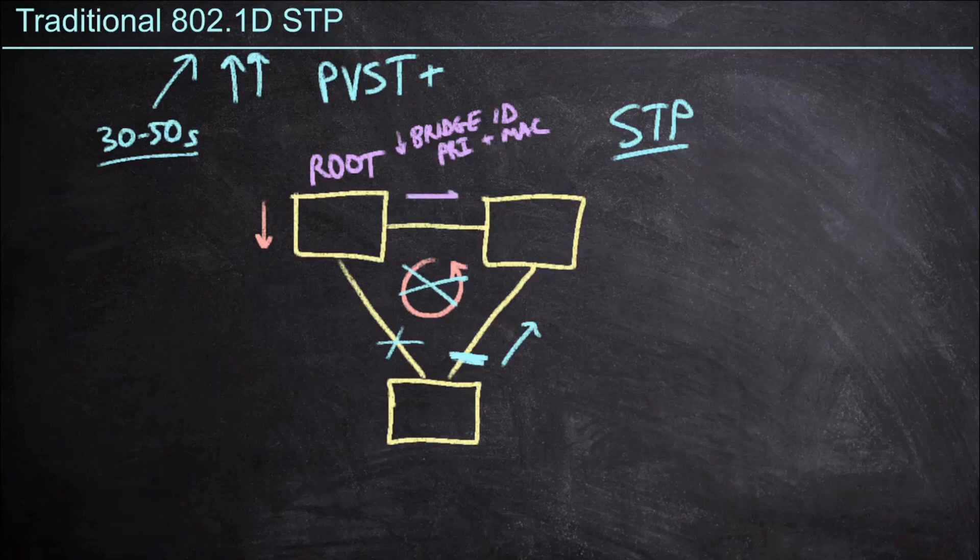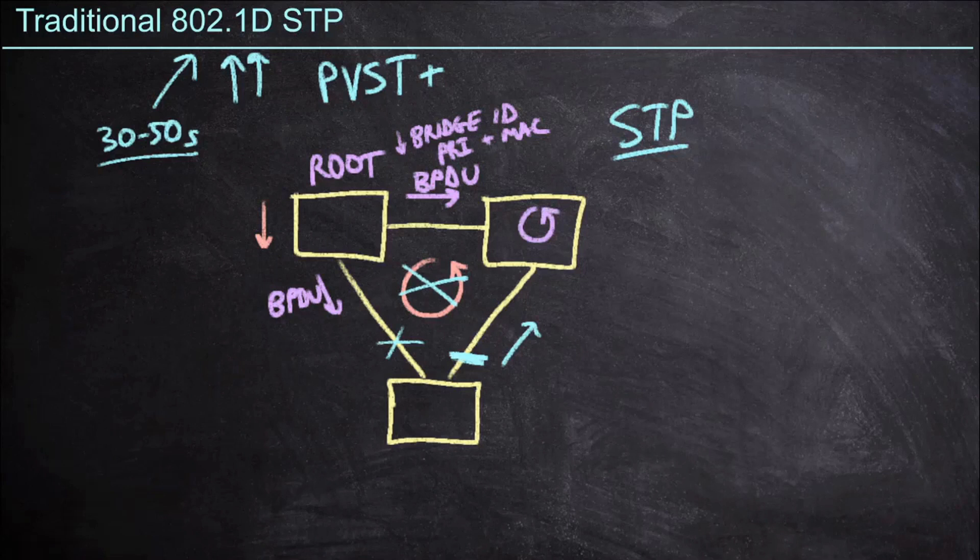This root switch is going to generate something we call Bridge Protocol Data Units, or BPDUs. These BPDUs are going to be flooded out all ports in the network. Switches that receive that BPDU are going to process the BPDU first and foremost, and then push that BPDU further down the network. We're going to get that from both sides here, where we're pushing BPDUs at each other. When a switch receives a BPDU, it's going to determine if that is the best port to reach the root. We're going to call those ports root ports. In our diagram here, the root ports are going to be these interfaces that directly face the root switch.